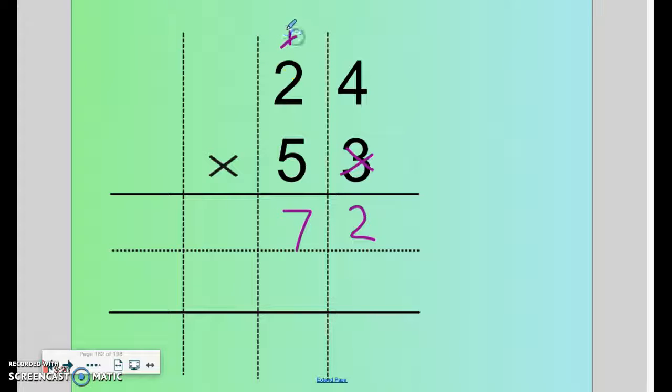Kill the 3. Kill the 1. Bury it. 5 times 4 is 20. So you put your 0. Carry your 2. 5 times 2 is 10 plus 2 is 12.